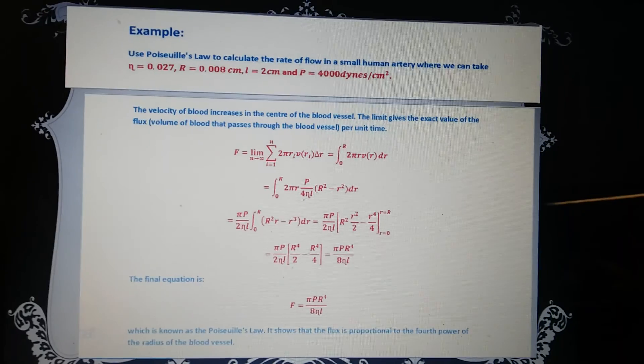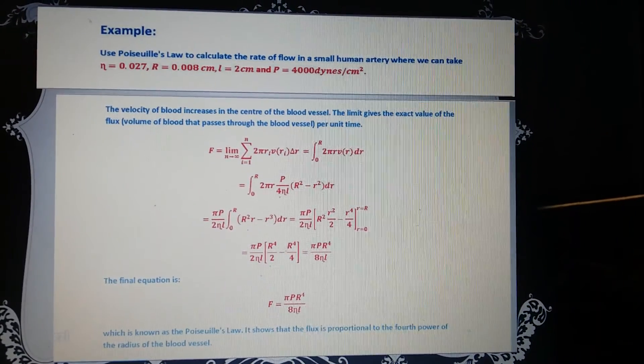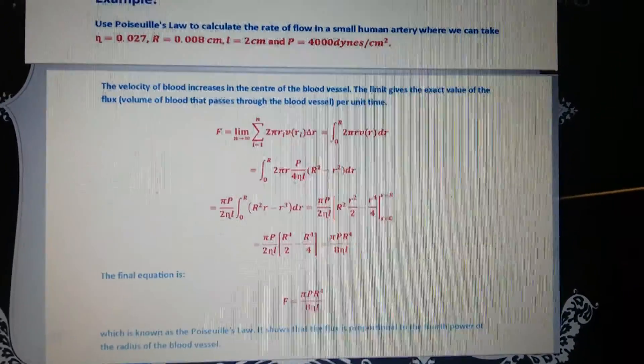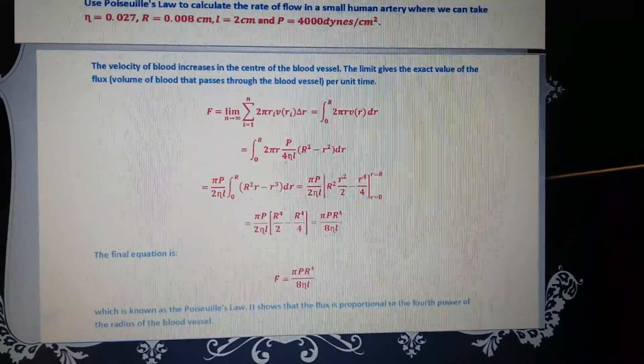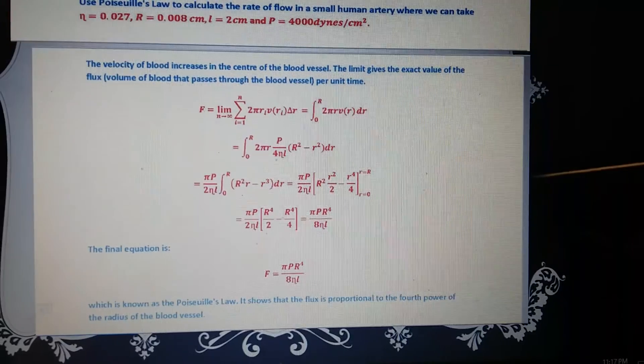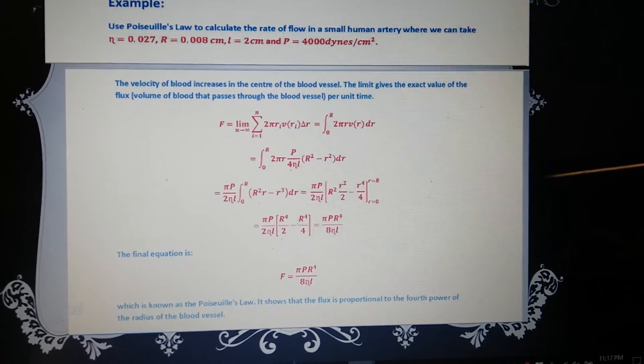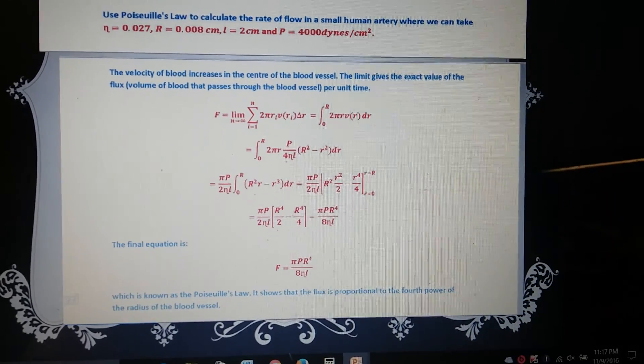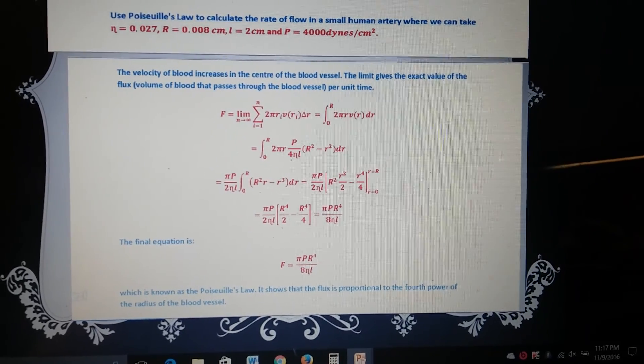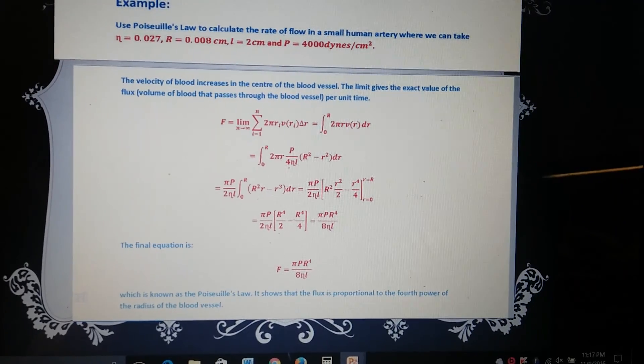Example, using Poiseuille's law to calculate the rate of flow in the small human artery where we can take, so these are the numbers, the numbers are given, we've got to plug them in. So the velocity of blood increases at the center of the blood vessel. The limit gives the exact values of the flux, volume of the blood that passes through the blood vessels. As you can see, that is the equation. Everything is plugged in. The final equation is F equals pi PR to the 4th over 8NL, which is known as Poiseuille's law.